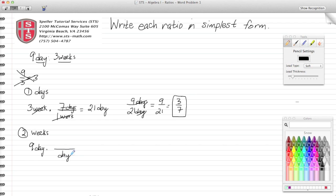So I can say here that seven days is the same thing as one week. Before I multiply, I cross cancel, and I'm left with 9/7 weeks. So now I know that nine days is the same thing as 9/7 weeks.